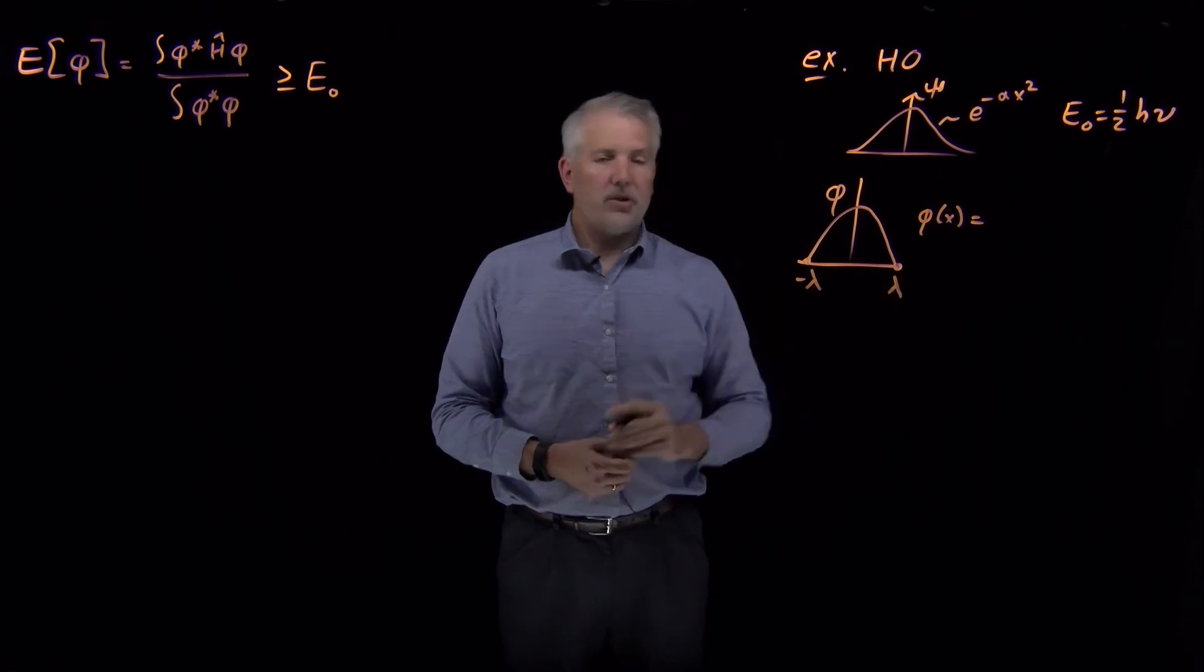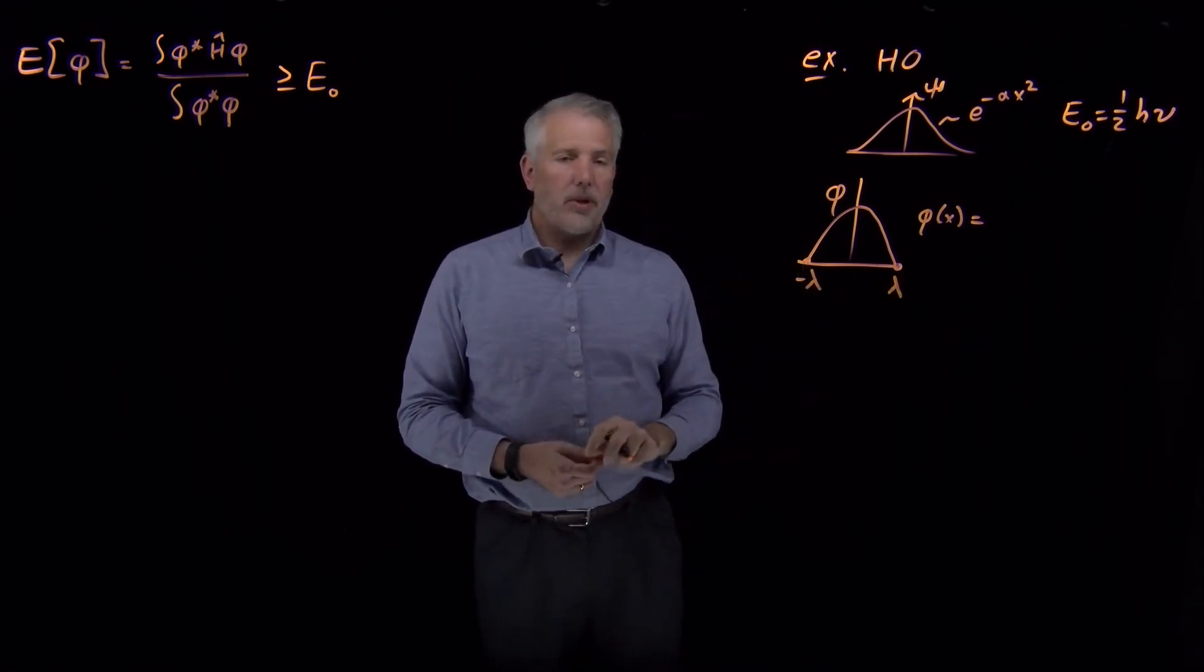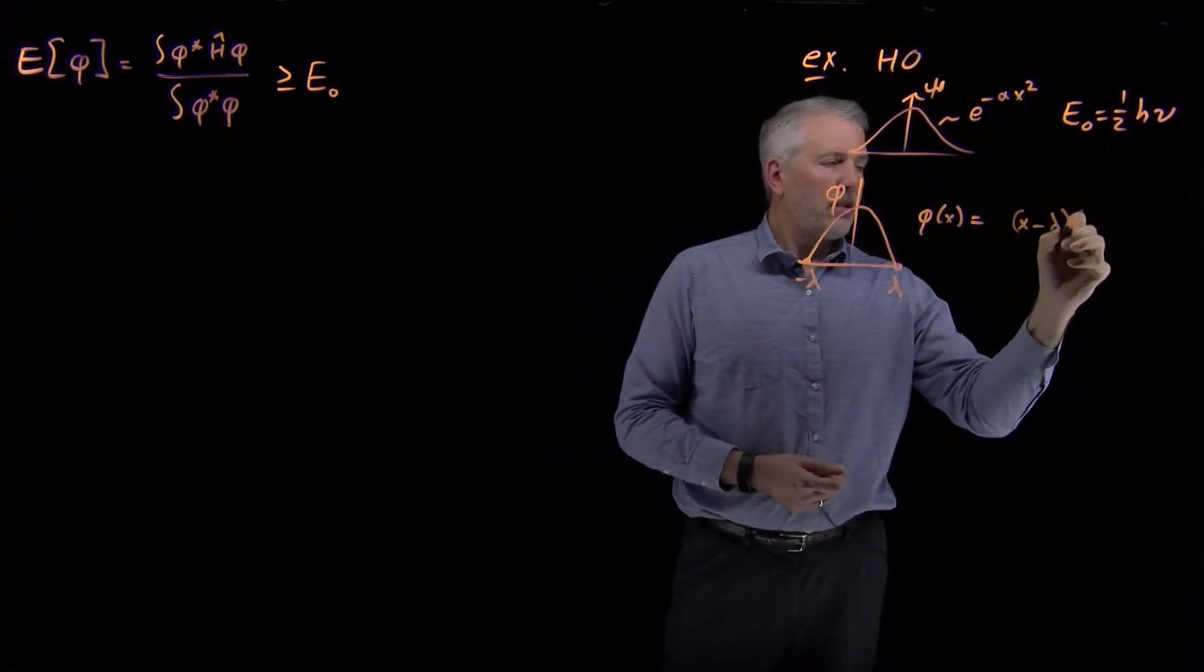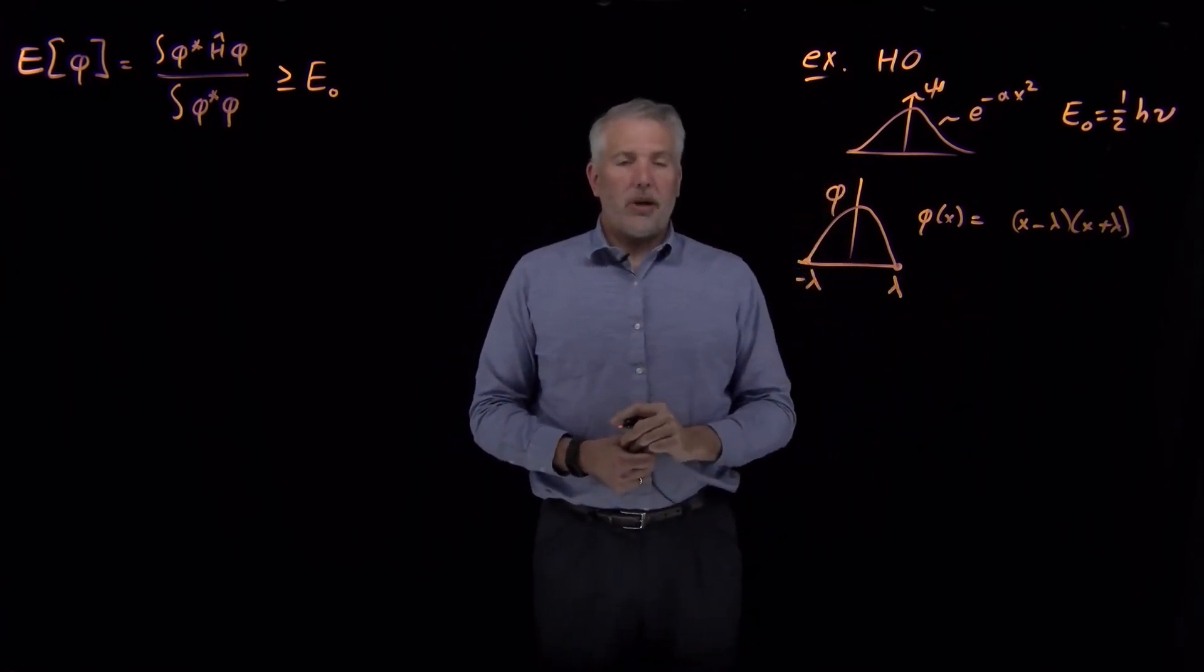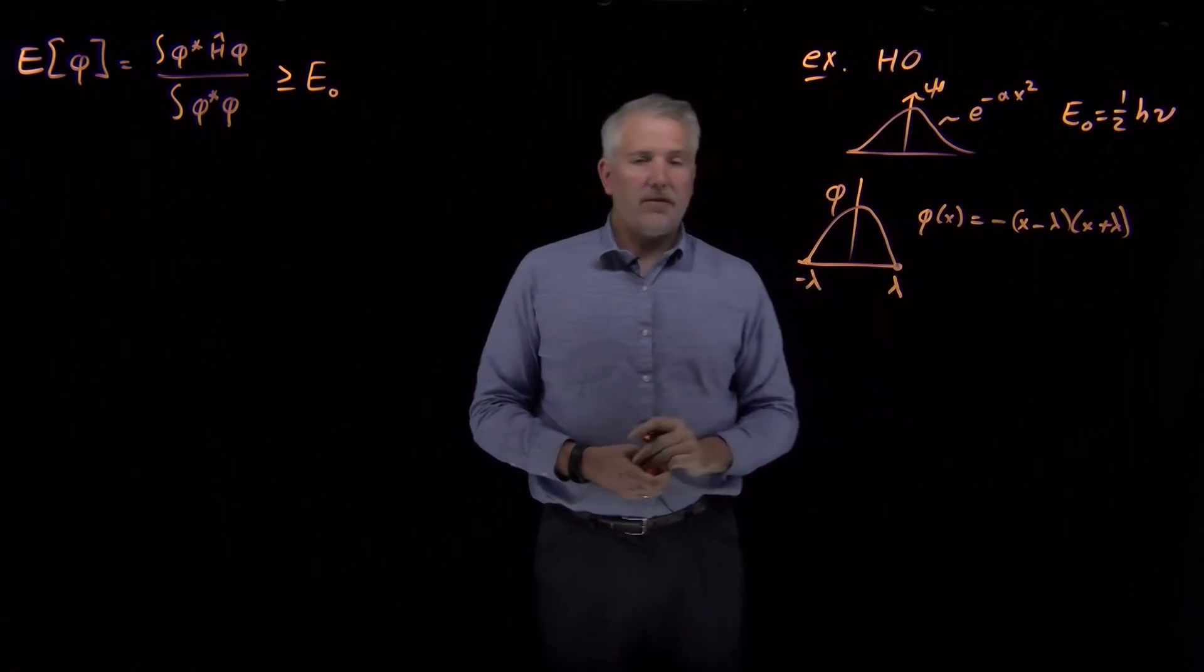But if it's got two zeros, one at negative lambda, one at positive lambda, and it's a parabola, the function's going to look like something like that. It's an upside-down parabola, so I'll stick a negative sign in front of it.